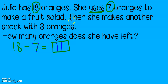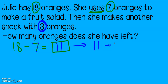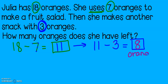Now I can keep reading. Then she makes another snack with three oranges. So if she makes another snack, we need to take these three oranges away. I'm going to take my eleven oranges and take three away because she made another snack. Eleven, ten, nine, eight. So she has eight oranges left, which is exactly my question. In this problem, since Julia used oranges first we did subtraction, then she used three more oranges, so this problem had two subtraction equations.